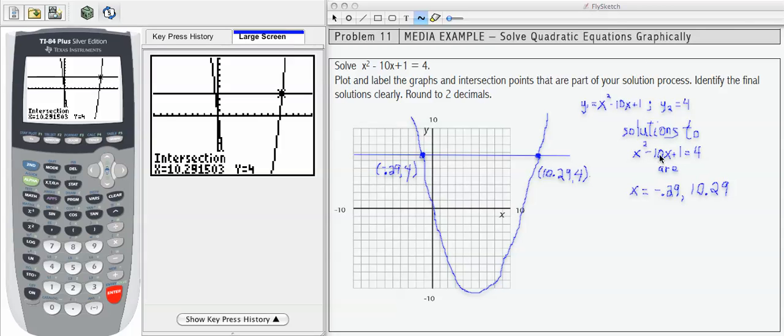The solutions to the equation I was given, x squared minus 10x plus 1 equals 4, are just the x coordinates of the intersections of those two graphs, the y1 and the y2.